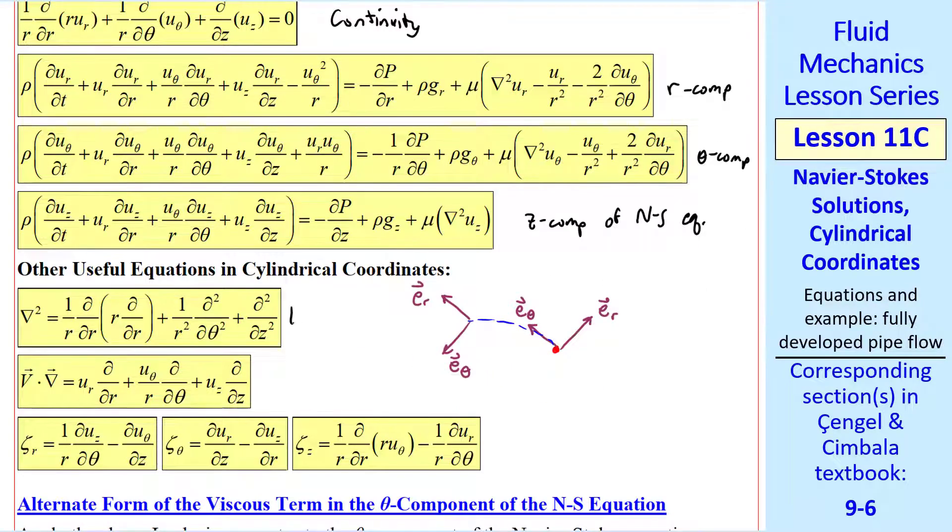Notice that er is pointing this way here, but this way at a different point. Likewise, eθ changes direction. So you can think of it as some crosstalk between these two equations, since these vectors are changing, they affect each other, and these extra terms arise. Again, I list some other useful equations: the Laplacian, this v dot del term in the Navier-Stokes equation, and the components of the vorticity vector, zeta r, zeta theta, and zeta z. As I said, these equations will come in handy later.